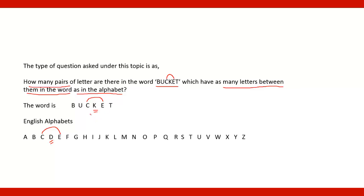So in BUCKET there are two letters C and E, between them there is one letter, and in alphabet also there is one letter between C and E. Therefore there is one pair in the word BUCKET which have as many letters between them in the word as in the alphabet.